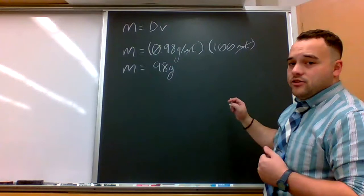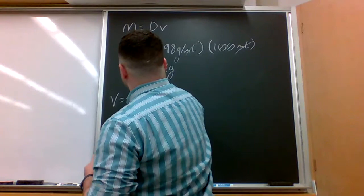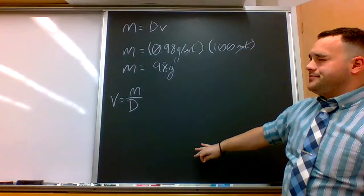And if we are given the density and mass, we can find the volume. So volume equals mass divided by density.